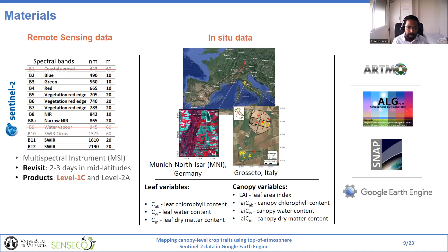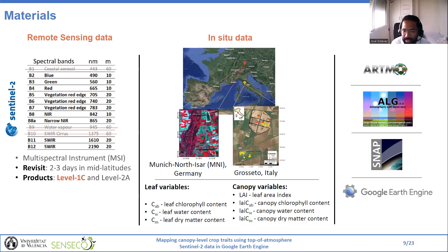Regarding the software used in this study: we use R-MOD, which runs leaf and canopy radiative transfer models and allows training and running machine learning algorithms for vegetation retrieval. We also use ALG, a toolbox that allows running atmospheric radiative transfer models such as MODTRAN, 6SB, and libRadtran. We also use SNAP, a popular software from ESA, which we use for comparison with our developed models. And finally, we use Google Earth Engine, the cloud computing platform, which includes remote sensing data such as the Sentinel-2 catalog.